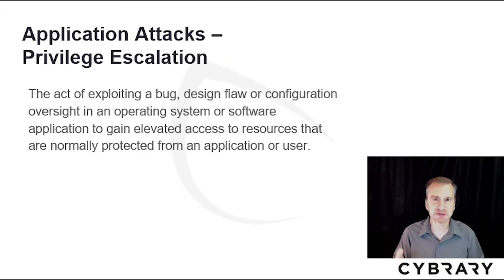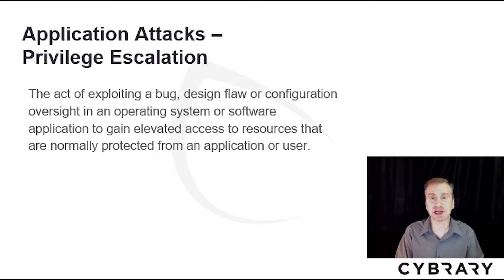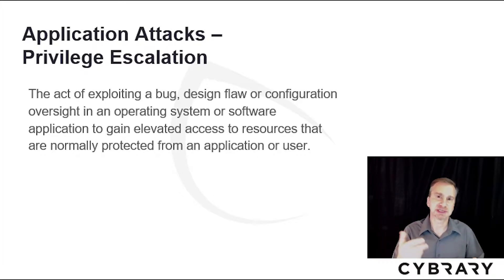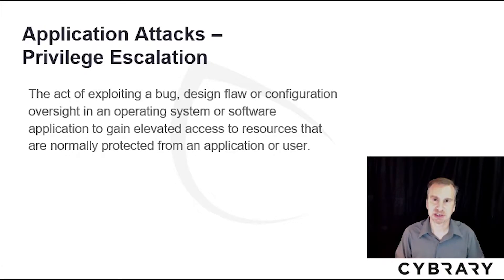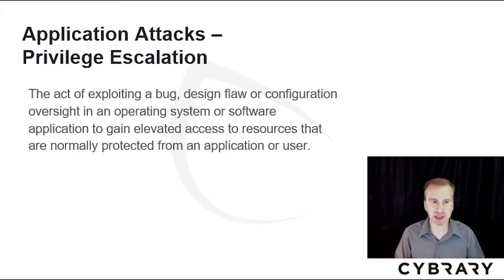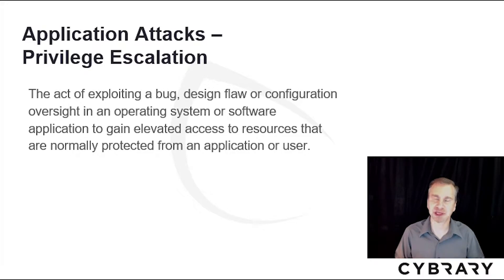Privilege escalation is a form of pivoting attack. The attacker will breach the system having bare authentication rights and bare privileges, then try to gain further privileges such as administrator or root, or the privilege running a particular application. It's the act of exploiting a bug, design flaw, or configuration oversight in the operating system, application, or software to gain elevated access to resources normally protected from that application or user.